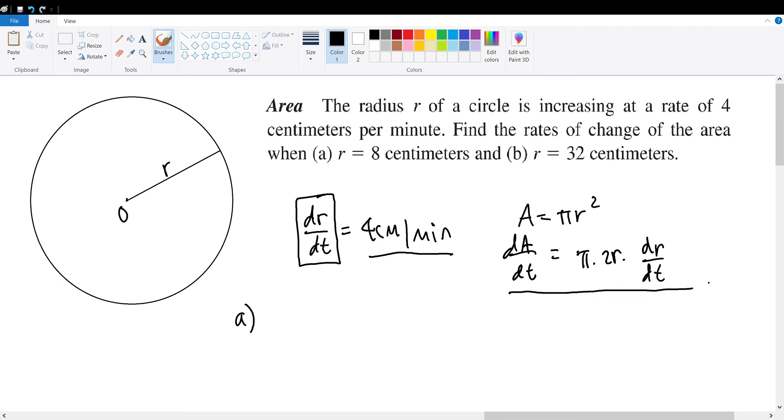And since r and A are both independent functions of time, we must apply the chain rule to differentiate it as such. Now, what we can do is apply our given values. We're told that dr over dt is 4. So dA over dt is the same thing as 2 pi r times 4, or 8 pi r.